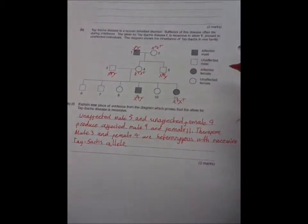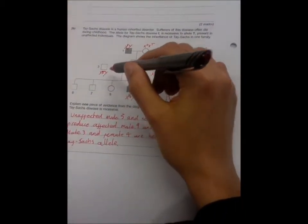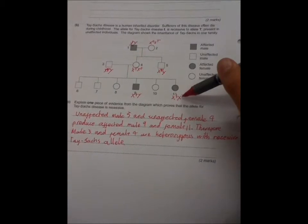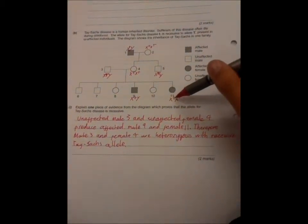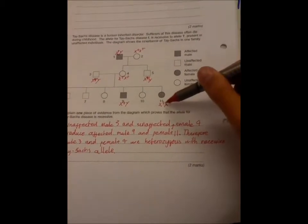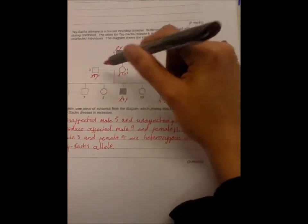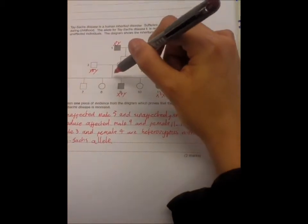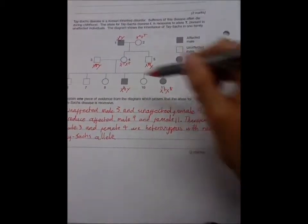X, big T, Y. But if we look at female 11 gets two, sorry, recessive, gets two small t's. But only one of the small t's is available from the gametes. So, if allele was on the X chromosome,